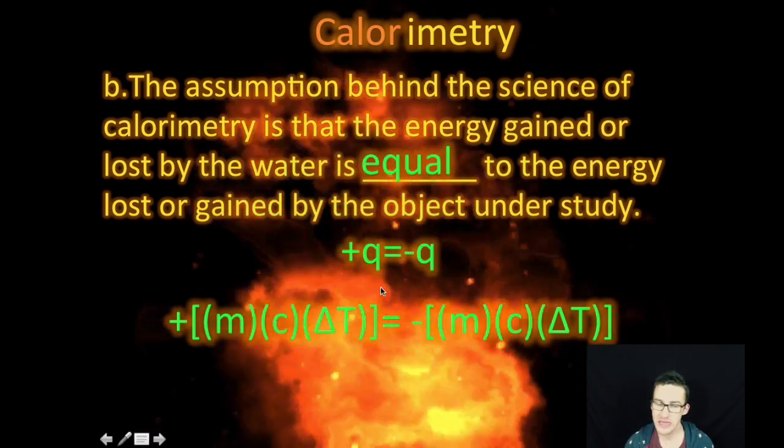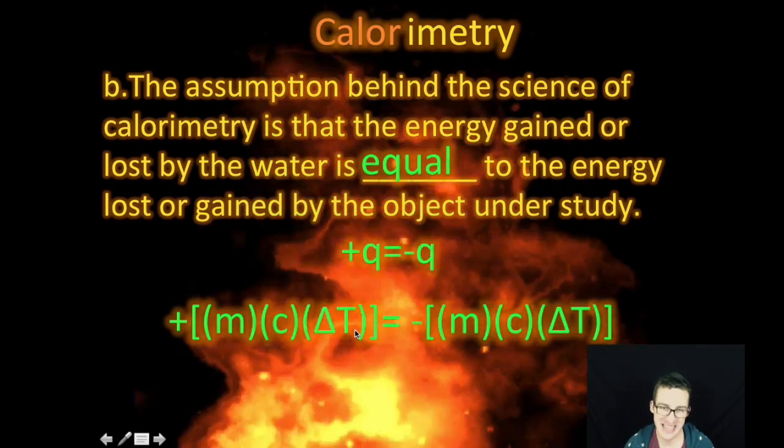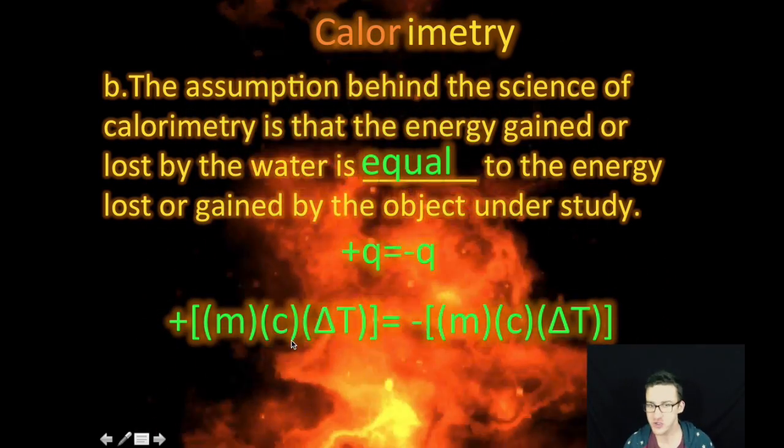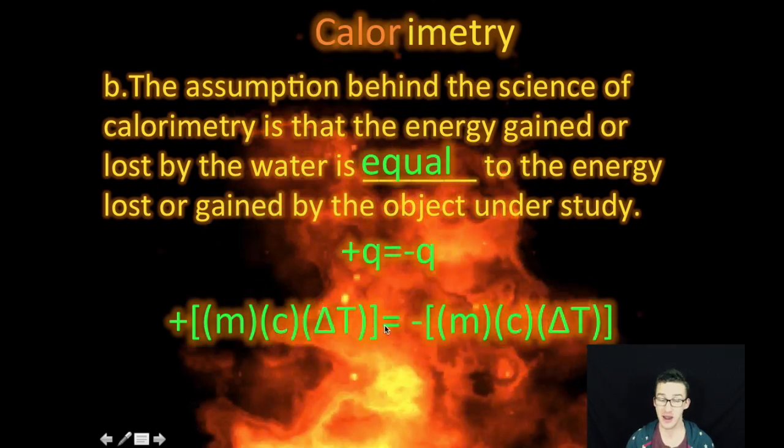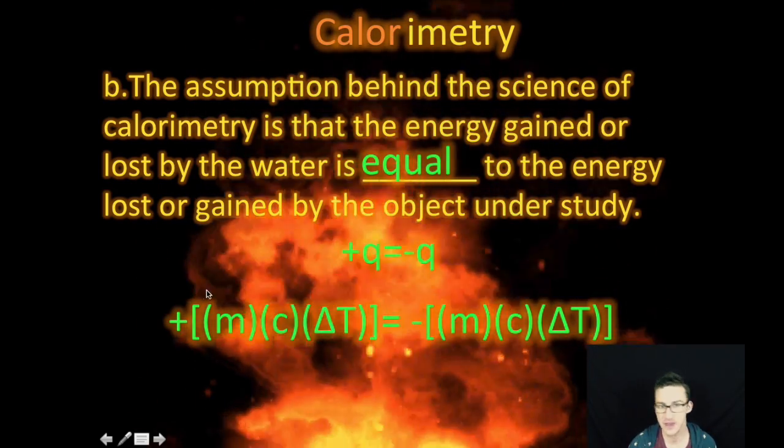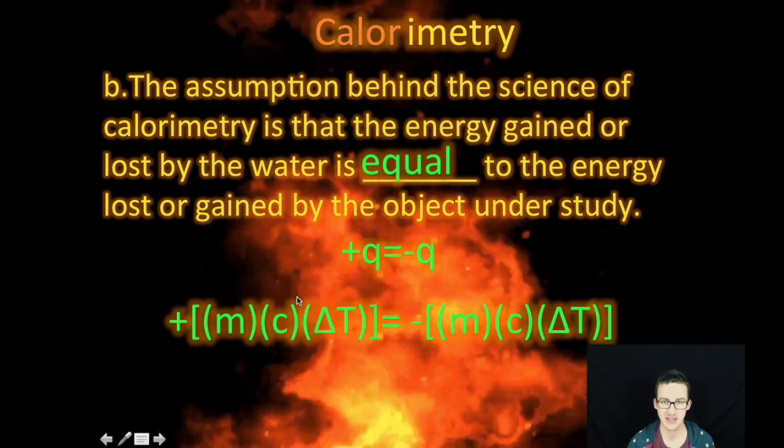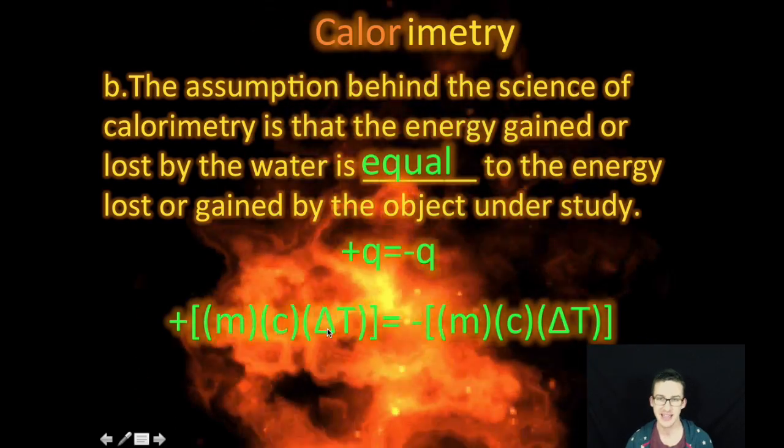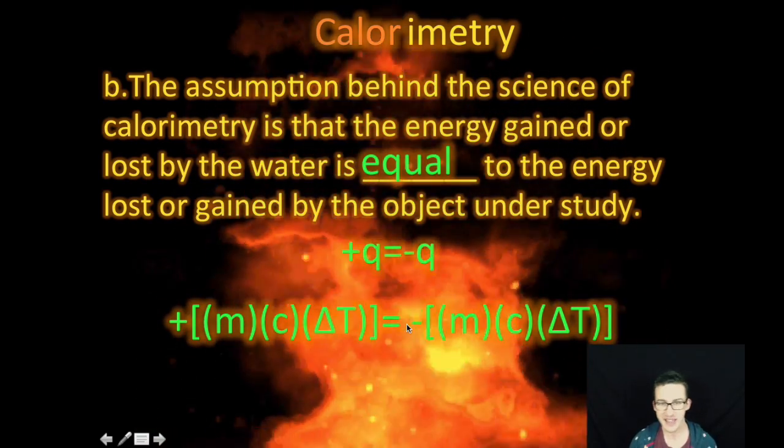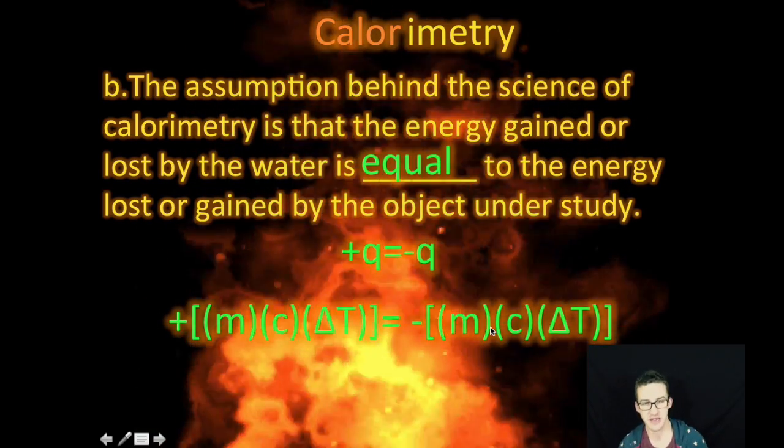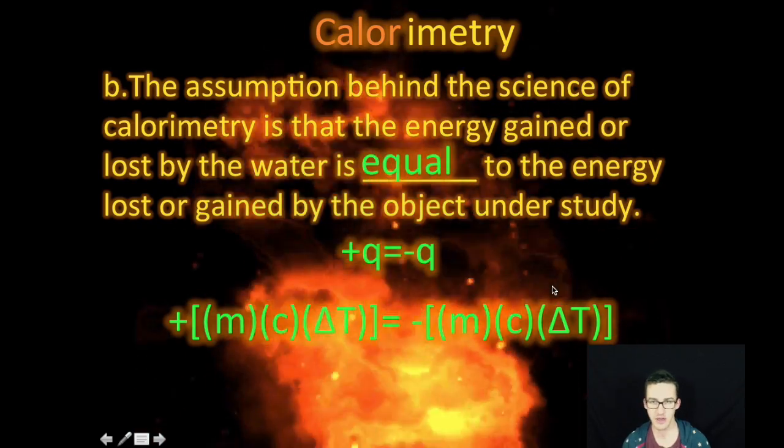And because Q equals MC delta T, we can then further extrapolate the relationship that you see on your screen there, where the positive of the mass times specific heat times temperature change is equal to the negative of the mass times the specific heat times the temperature change of the other thing.